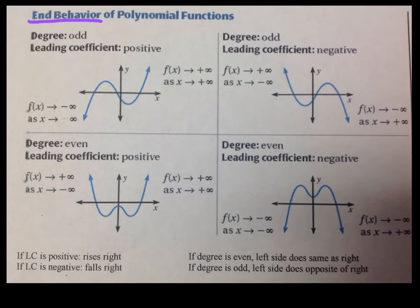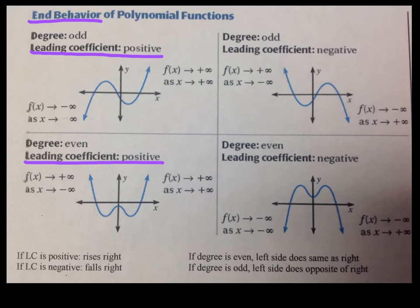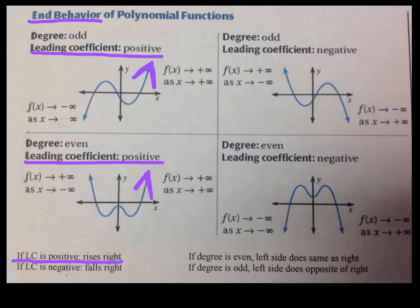We want to talk about when we graph our polynomials — x squared, x cubed, x to the fourth — what do the ends do? Push pause and copy down this chart. The leading coefficient controls the right end. If the leading coefficient is positive — remember with quadratics we said it's a happy parabola — it rises on the right. If the leading coefficient is negative, it falls on the right.